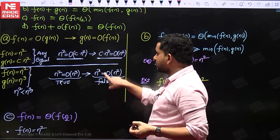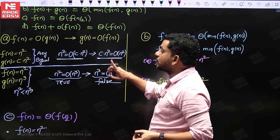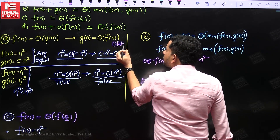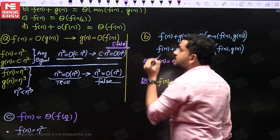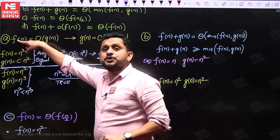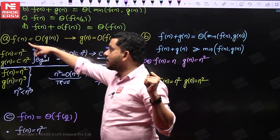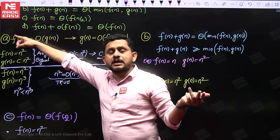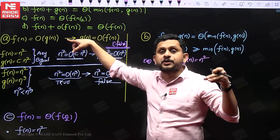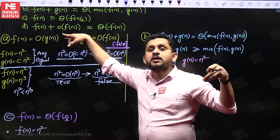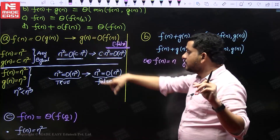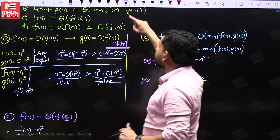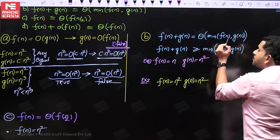Now, g(n) is n³, and big O of f(n) means big O of n². That statement is false. Even if the implication fails for one case, we consider the overall statement false. For this statement to be true, it should hold for every possible function. Since g can be asymptotically bigger than f(n), the first statement is false.